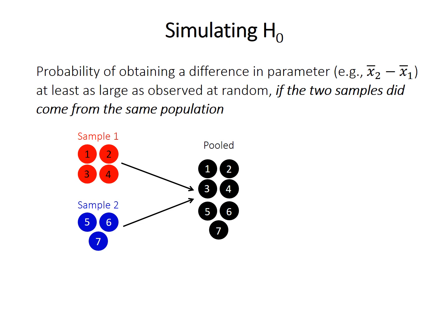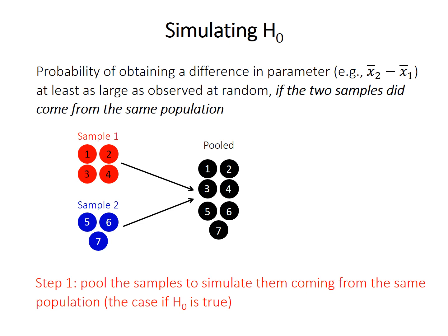We can essentially simulate what it would be like if the null hypothesis was true by pooling the two samples into a single population. So we take our two samples and put them together into one big sample, shuffling up all the data into one pool. So this basically is simulating what the case would be if the null hypothesis is true. Remember, the null hypothesis is that they came from populations with the same mean, or they came from the same population.